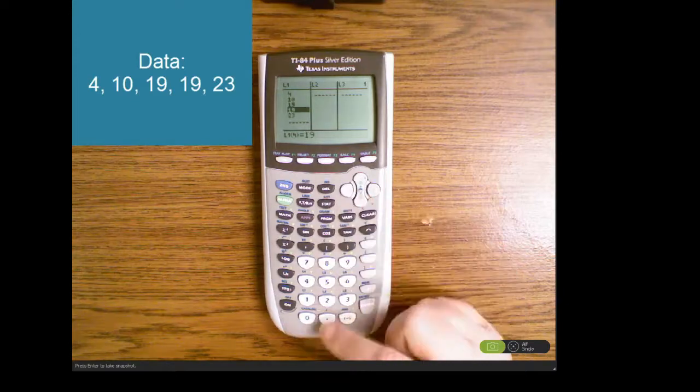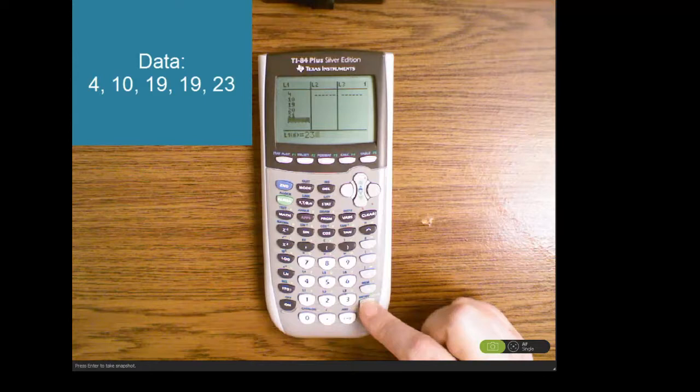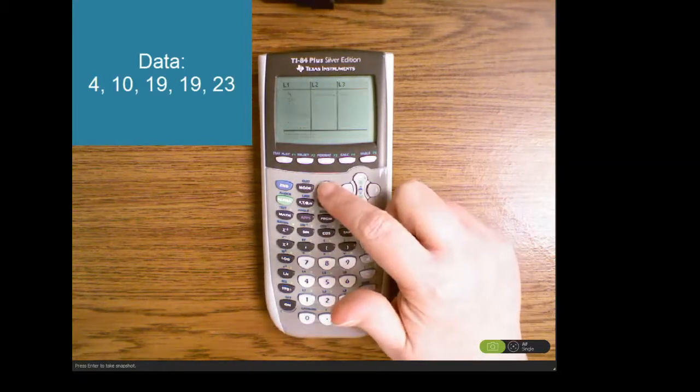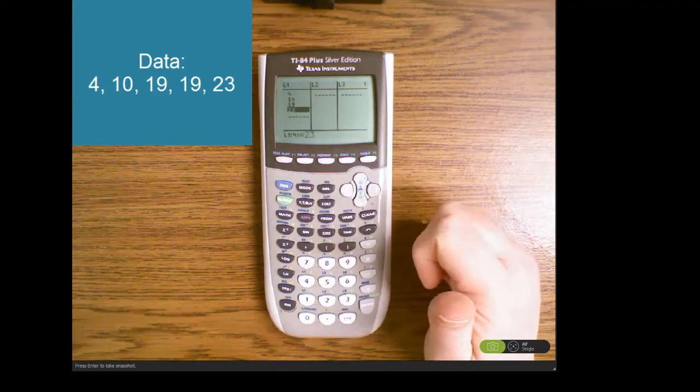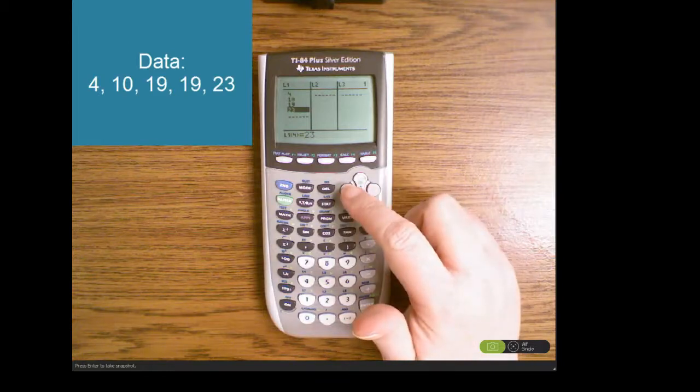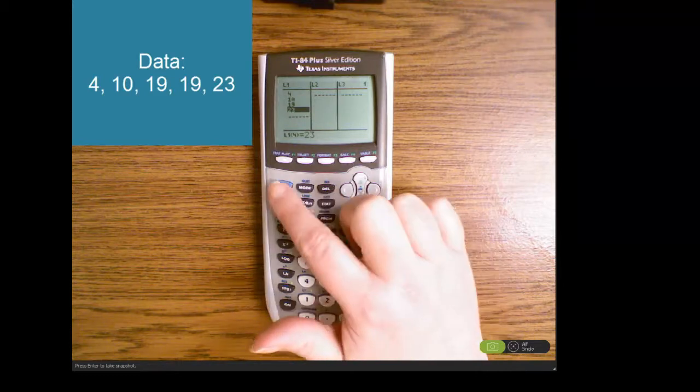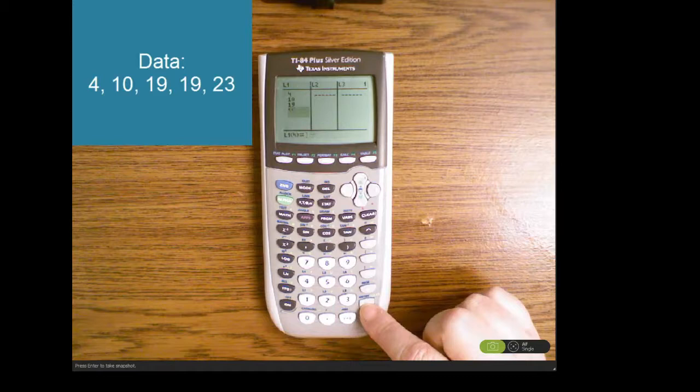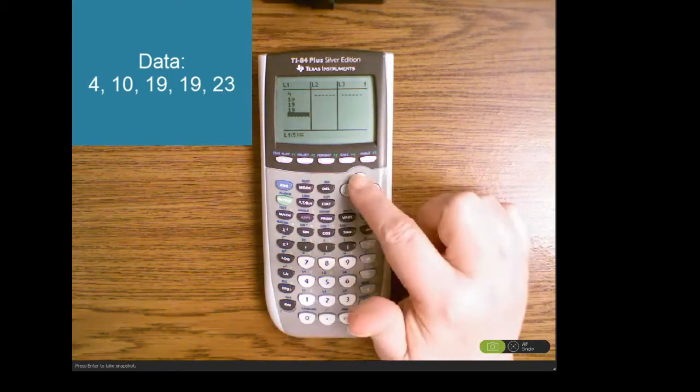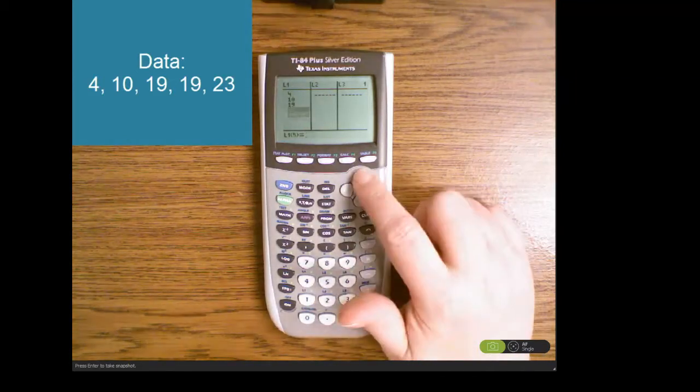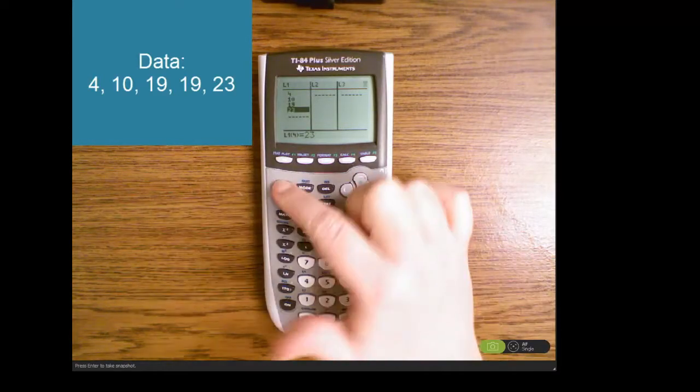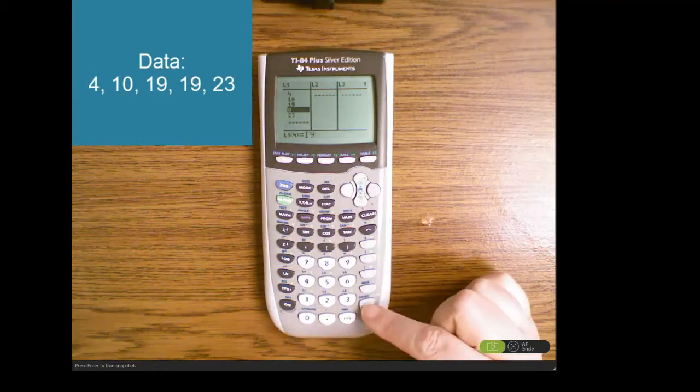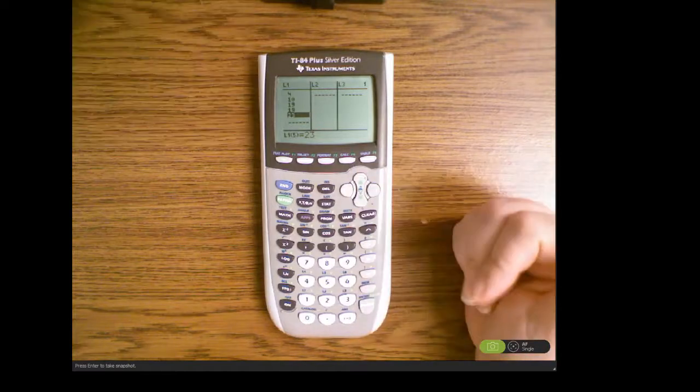If I had typed 20 then 21 and then 23, I could type over one and then I can delete an entry. If I had accidentally deleted too many entries I could also use the insert key. The insert key is above the delete key so I can go second insert and then type in 19 and enter. So those are some ways that you can edit your data.